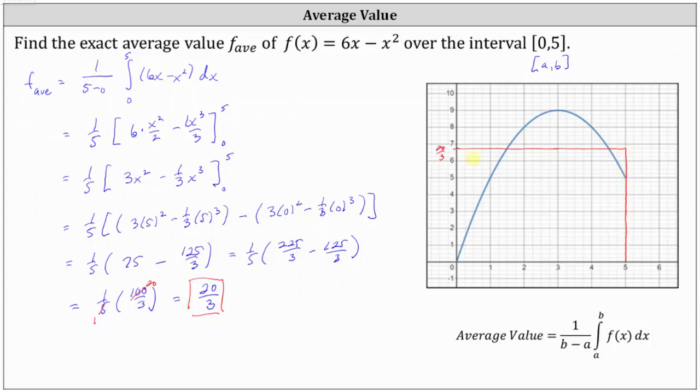And the area of this rectangle with a height of 20 thirds over the closed interval from 0 to 5 is exactly equal to the area bounded by the function and the x-axis over the same closed interval.